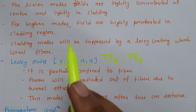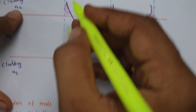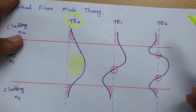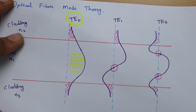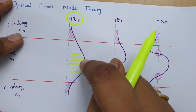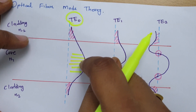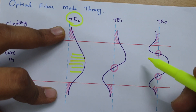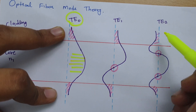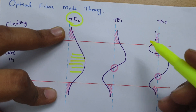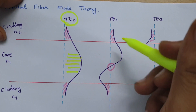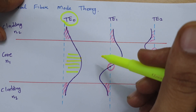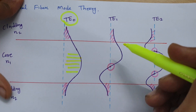There are three categories of modes. One is lower modes — such as TE0 — where the field is highly concentrated at the center and less towards the cladding. Then there are higher modes, where the field is less concentrated at center and more towards the cladding. And then there are leaky modes, where the field goes out of the fiber due to the tunneling effect and power gets radiated out.